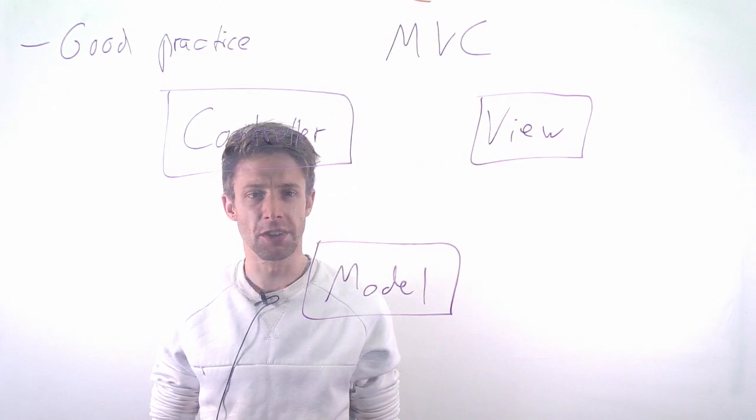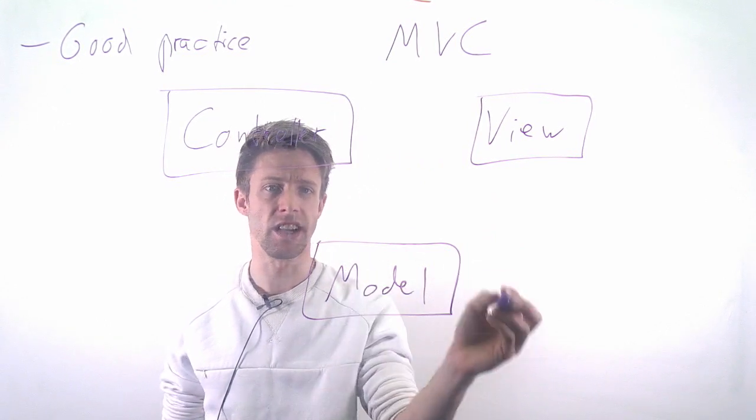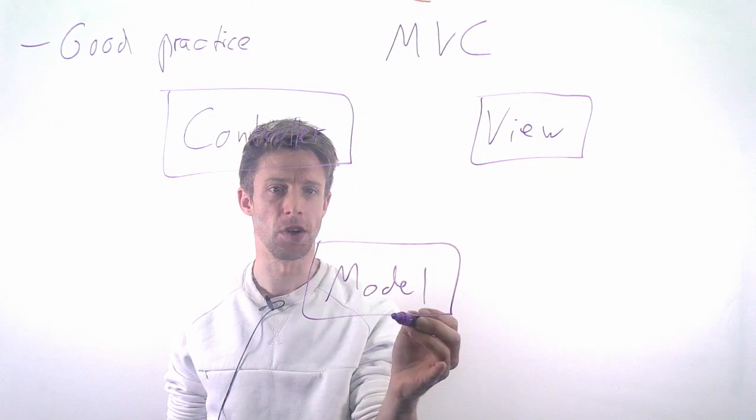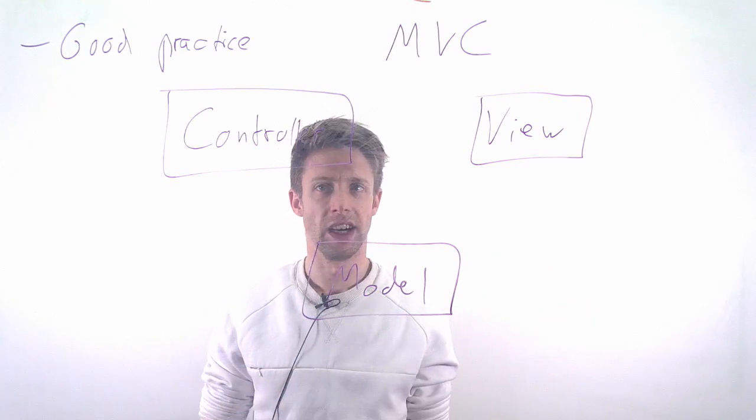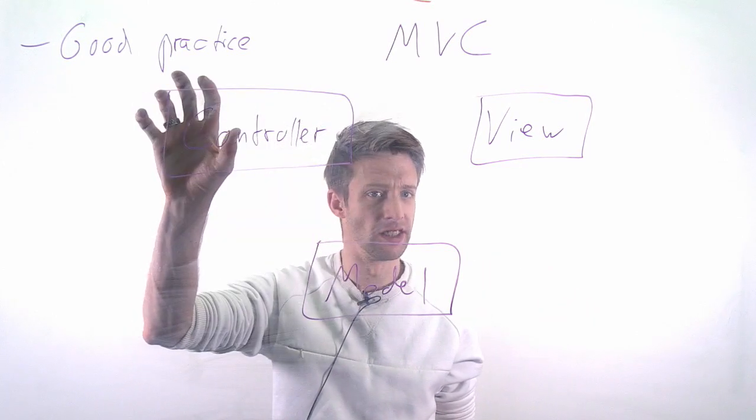What we do in the Model-View-Controller is essentially try to have the data, the state of our data which is in the model, independent from the view or the representation of it, and the way we control it as well.